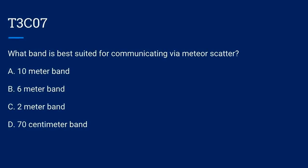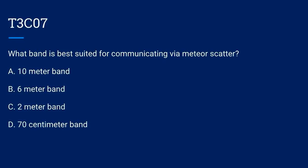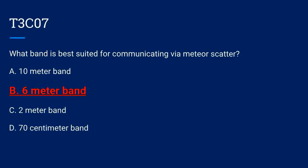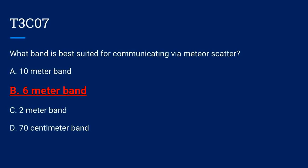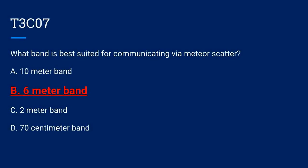T3C07. What band is best suited for communicating via meteor scatter? A. 10 meter band. B. 6 meter band. C. 2 meter band. Or D. 70 centimeter band. The correct answer is B: 6 meter band.